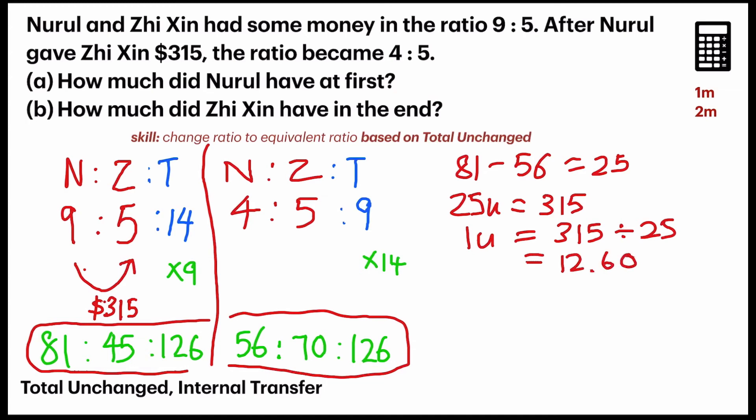Let's zoom straight to the question. A. How much did Nuru have at first? So, we go to before, the ratio before. And we zoom straight into Nuru. Before, she had 81 units. We already found 1 unit. So, 81 is just $12.60 times 81. And this question, you can use the calculator. So, the answer is $1,020.60. That's the answer for A.